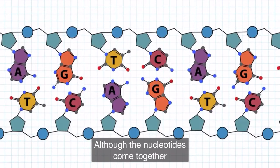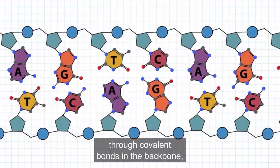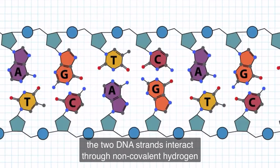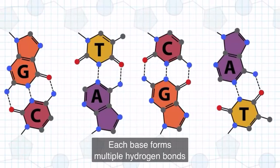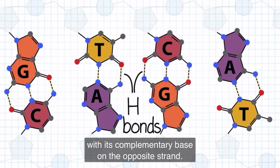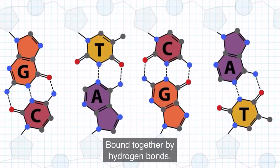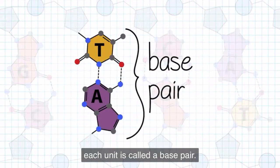Although the nucleotides come together through covalent bonds in the backbone, the two DNA strands interact through non-covalent hydrogen bonds between the bases. Each base forms multiple hydrogen bonds with its complementary base on the opposite strand. Bound together by hydrogen bonds, each unit is called a base pair.